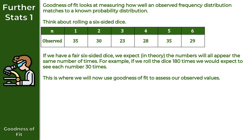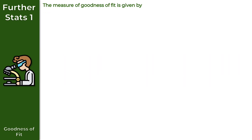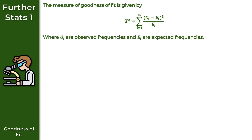This is where we will use goodness of fit to assess our observed values. The measure of goodness of fit is given by the following result. We get x-squared — our chi-squared value — which is equal to the summation from i equals 1 to n of the observed value minus the expected value, squared, divided by the expected value. Here, o subscript i is the observed frequencies and e subscript i is the expected frequencies.